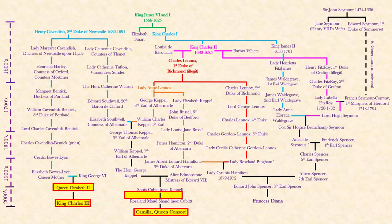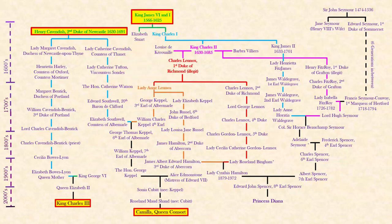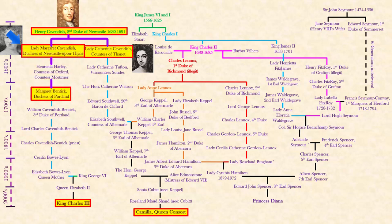Charles and Camilla share two common ancestors: Henry Cavendish, the Second Duke of Newcastle in the 1600s, and King James the Sixth of Scotland and First of England in the 1500s. Starting with Henry Cavendish, his third child Lady Margaret and fifth child Lady Catherine are the ancestresses of Charles and Camilla. Lady Margaret was born in the 1600s and had a daughter Henrietta; her daughter Margaret Benton began the new century in the 1700s, and she had William who had Lord Charles.